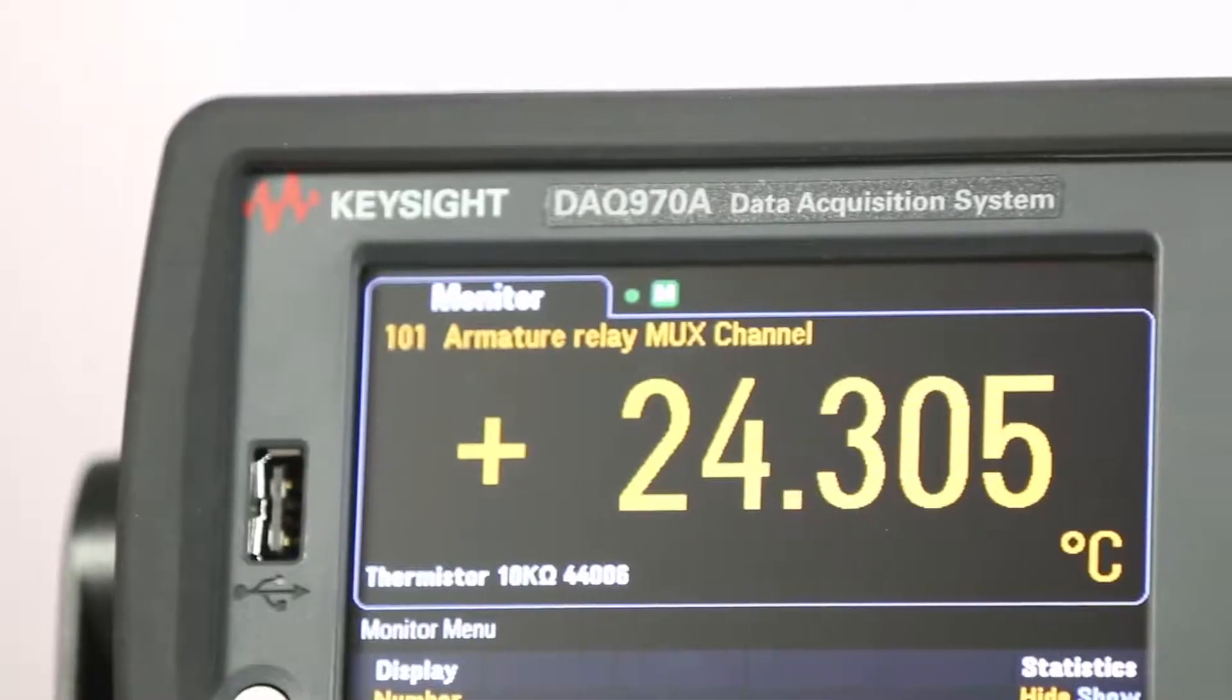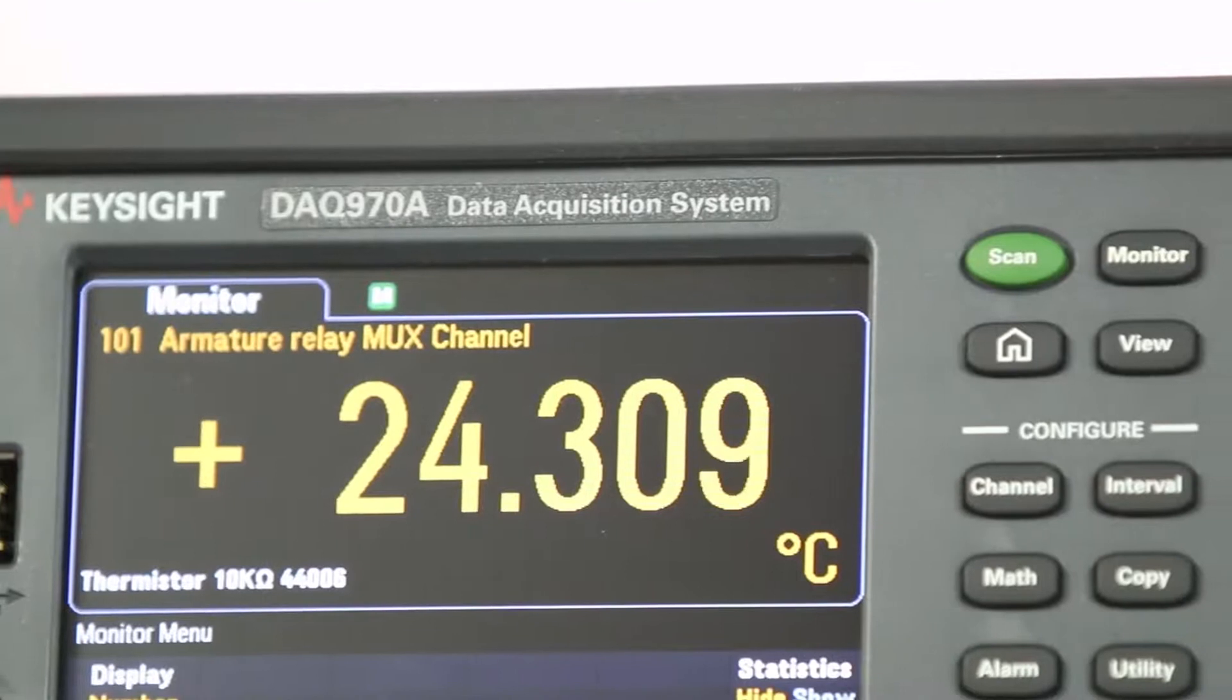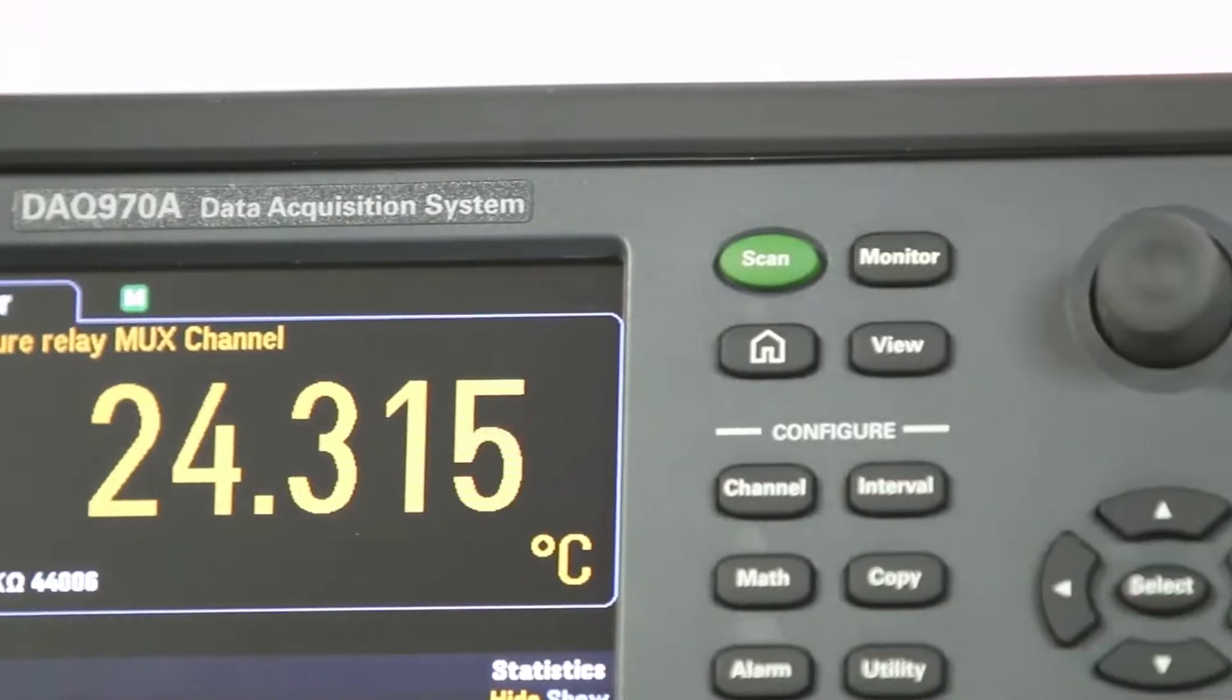The DAQ 970A mainframe has a color graphical display with a new user interface. It is now much easier to set up channels because you can use the intuitive LCD screen and soft keys for configuration.